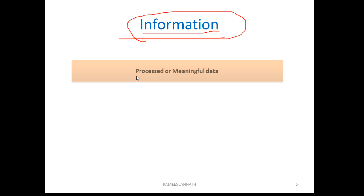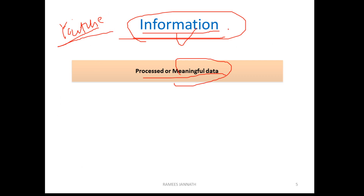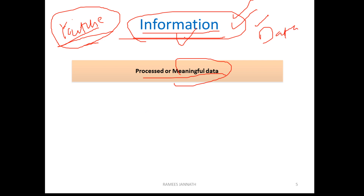So what is information? Information is called processed or meaningful data. For example, you can use YouTube — we have a lot of videos, and that is information. Meaningful data is called information. So processed, meaningful data is called information.